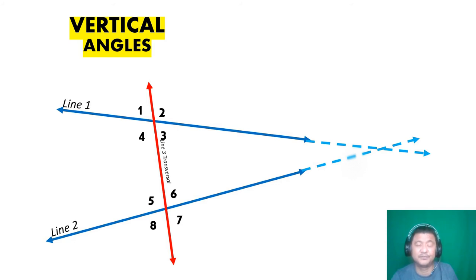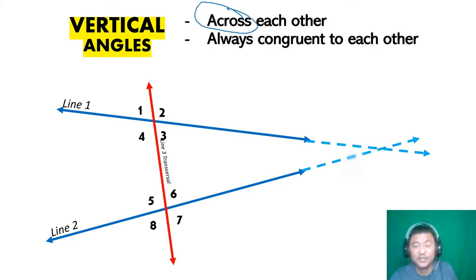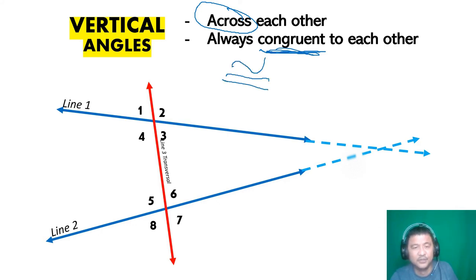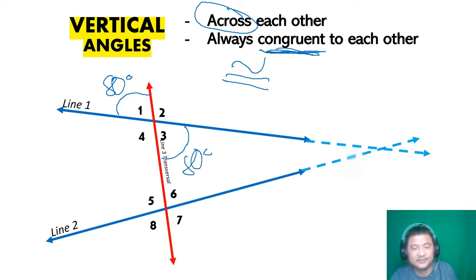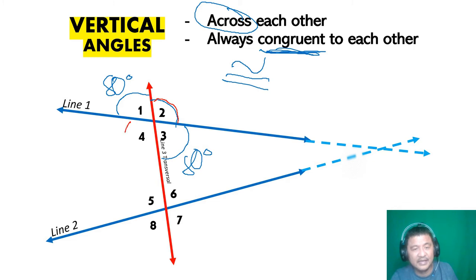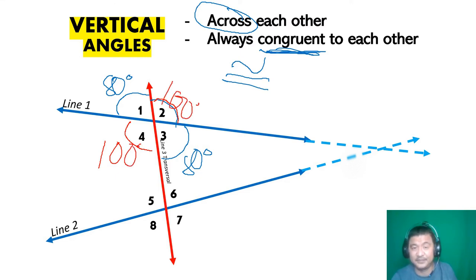Vertical angles — they are across each other, directly in front of one another, and they are always congruent to each other. Which angle is across angle one? Angle three. If angle one is 80 degrees, angle three is also 80 degrees. The angle across in front has the same measure. And the vertical angle in front of angle two is angle four — if angle two is 100 degrees, angle four is also 100 degrees. They are always congruent.